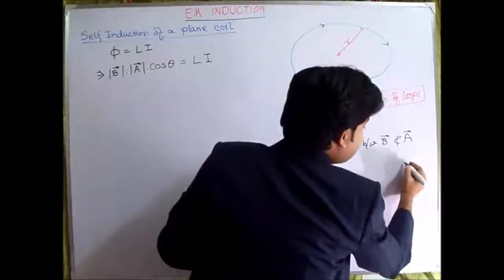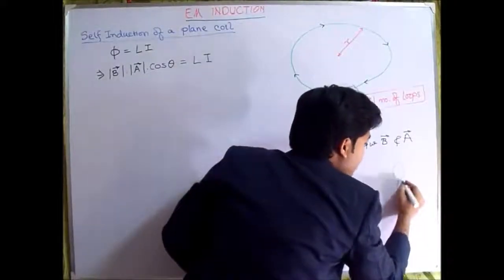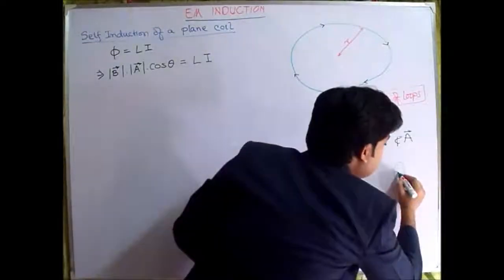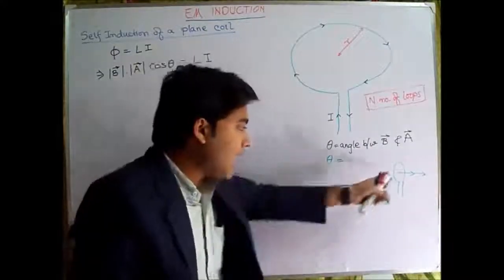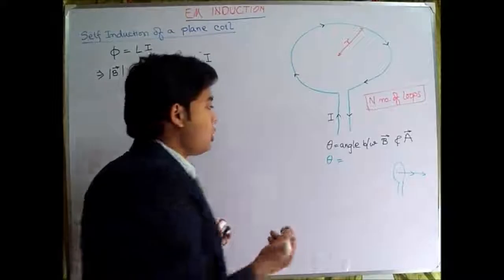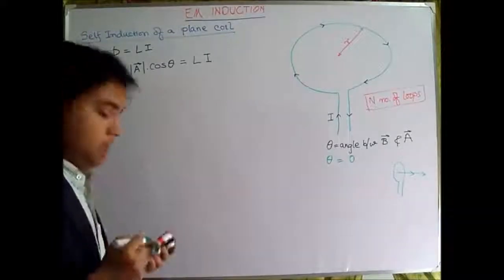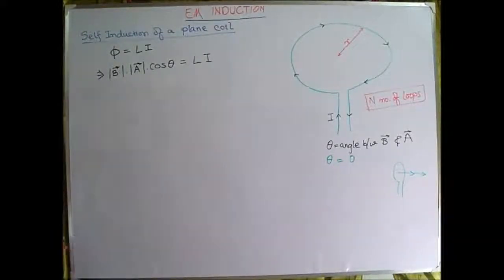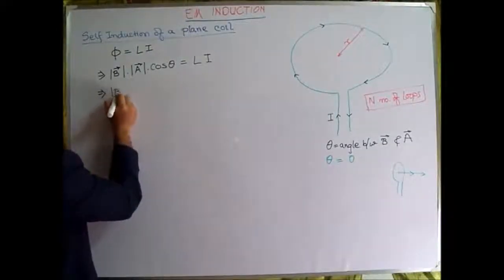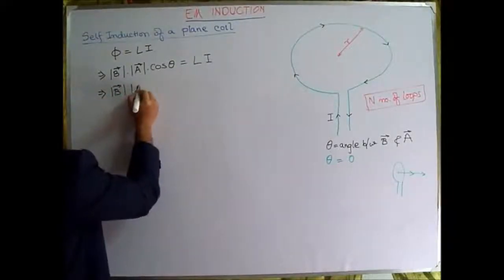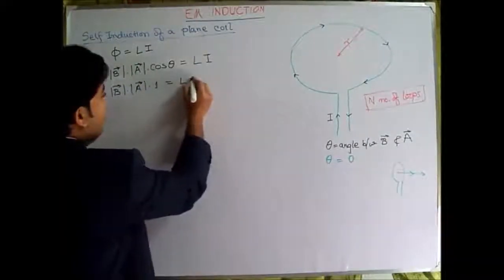So, over here what we could see, if we look at it from this side, we will see a coil like this. Over here the B is also like this, and the A is also like this. So, the angle between them is zero. And cos of zero will be equal to one, which implies the magnitude of B multiplied by the magnitude of A is equals to LI.